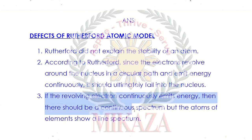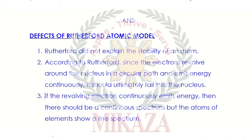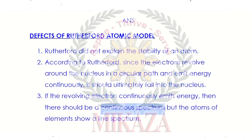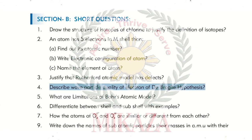The second reason the model was rejected: if the revolving electron continuously emits energy, it should show a continuous spectrum. However, elements of atoms actually show a line spectrum. Because a continuous spectrum was expected but a line spectrum was observed, Rutherford's atomic model was rejected for these reasons.